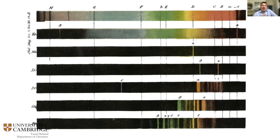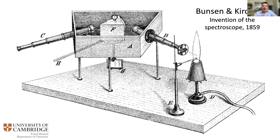They noticed this technique was incredibly sensitive — a whole new analytical method, far more sensitive than any chemical test available at the time. They quantified this: burning just three milligrams of sodium chlorate mixed with milk sugar in the far corner of a 60-cubic-meter room, the smoke was enough to color the blue flame and give a distinct sodium line.